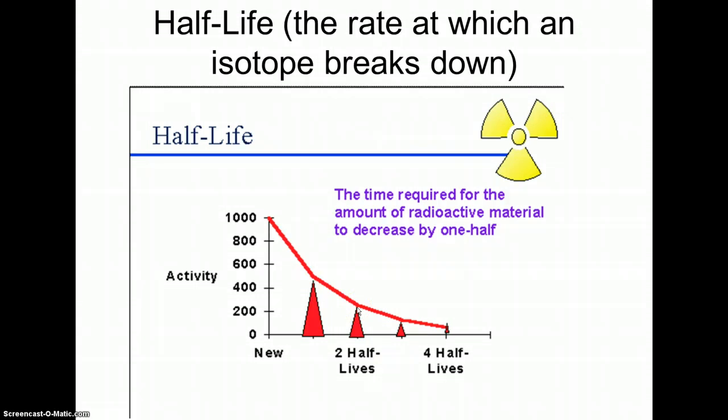The idea is that it decreases by a half for each half-life. So if the half-life was 5,000 years, then after 5,000 years, you would have about half left. But then after the next 5,000 years, you'd be down to a quarter, and then an eighth, and then a sixteenth, and the amount would just get smaller and smaller.